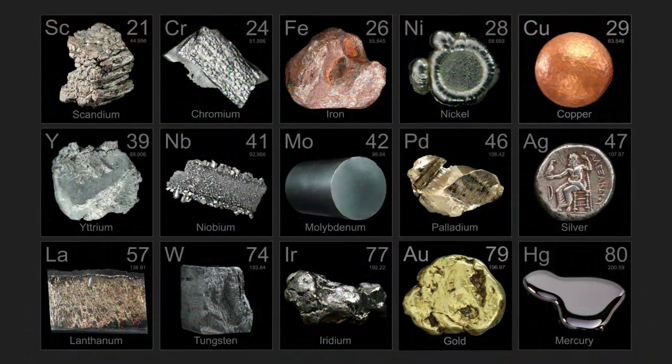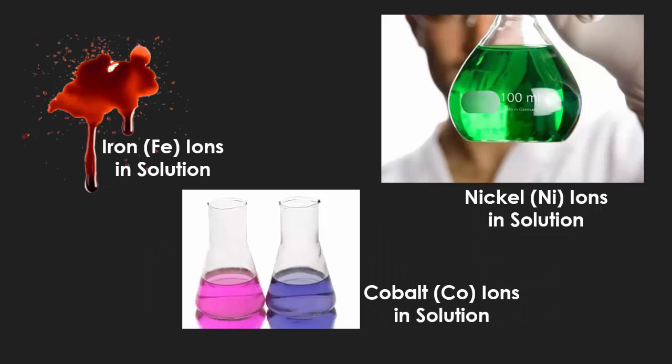Looking at these different examples, you have scandium, chromium, iron, nickel, copper, yttrium, niobium, neodymium, platinum, silver, lanthanum, tungsten, iridium, gold, and mercury. When you put these into solutions, you're going to get different colors. That's the reason why blood will always be red — because it has iron in a liquid solution. Cobalt can be either pink or blue, depending on the concentration of the cobalt ions in the solution. And nickel is going to be a greenish color.